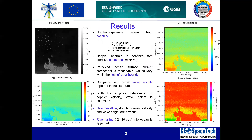Here are some results regarding this research. In the left-hand side top corner, we have the intensity of the SAR image with the coastline, ocean water, and some moving objects like ships in the water. On the right-hand side top corner, we have the Doppler centroid estimation, which is confined to the primitive baseband.